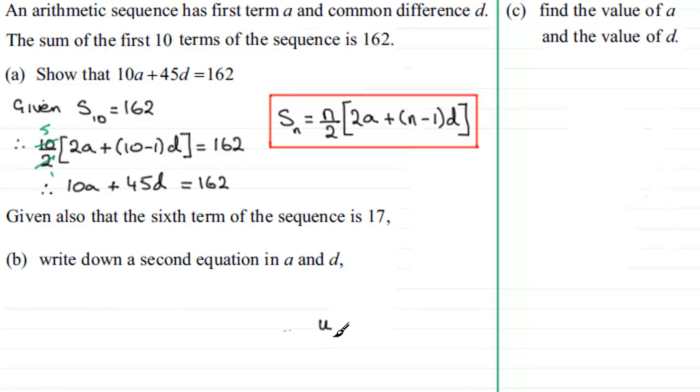It's given by UN, U with a subscript N, and it equals the first term A plus N minus 1 times the common difference. So do try and remember this particular formula as well.